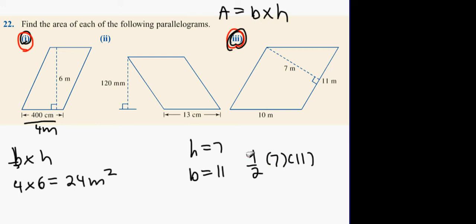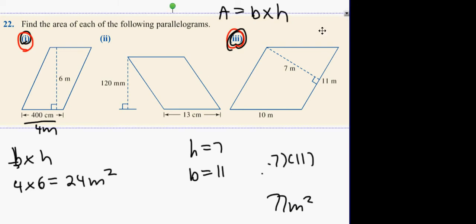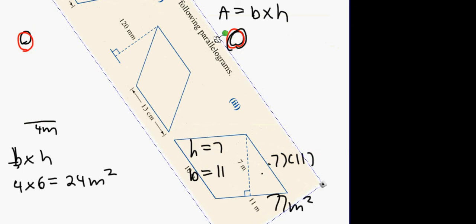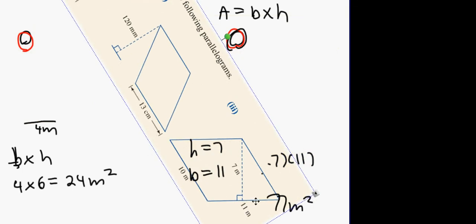It's not a half because it's two identical triangles. So it's 7 multiplied by 11. Which is 77. 77 meters squared. If you were to spin this around, you can see that 11 is the base and 7 is the height.